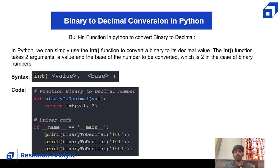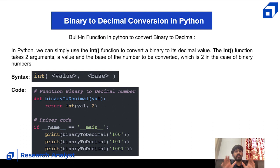In Python there is a built-in function to convert binary to decimal: the int() function. It takes two arguments — the value and the base. For binary to decimal, the base is 2. The syntax is int(value, 2), meaning the value has a base of 2 and we want to convert it to decimal, which has a base of 10.